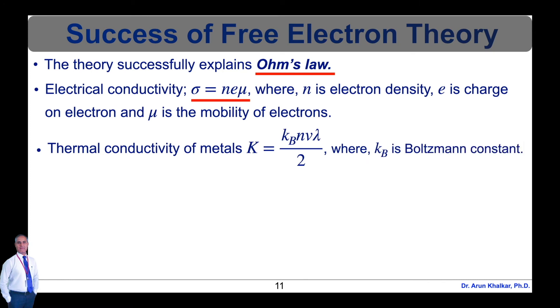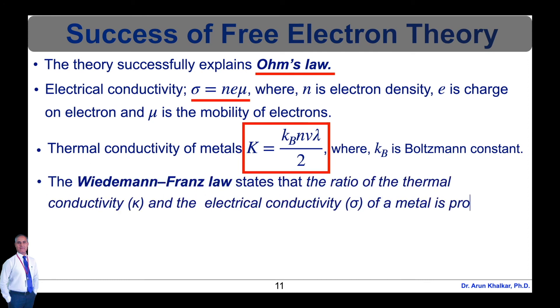The thermal conductivity explains thermal conductivity of metals at lower temperatures. Thermal conductivity of metals K equals Kb N V lambda divided by 2, where Kb is the Boltzmann's constant.